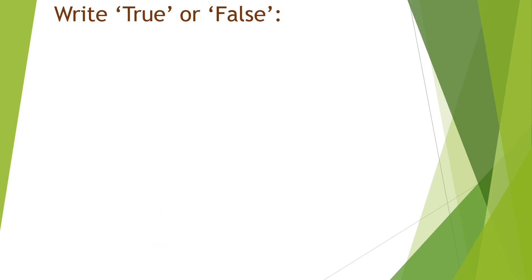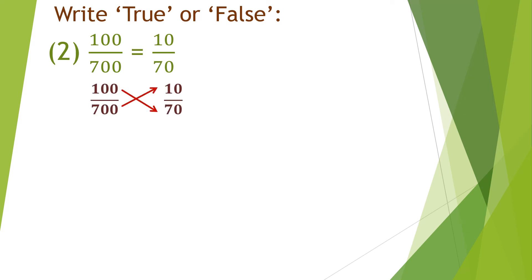Let us solve one more question. Question number 2: 100 upon 700 is equal to 10 upon 70. Do the cross multiplication — that means 100 multiplied by 70 is equal to 700 multiplied by 10. Everyone knows how to do multiplication, so pause the video and do the multiplication on your own and check.